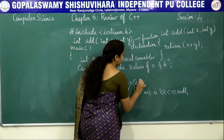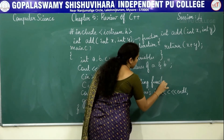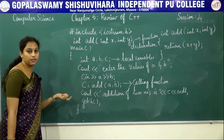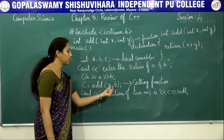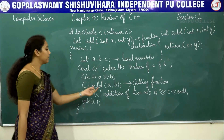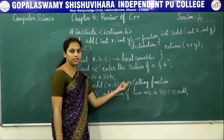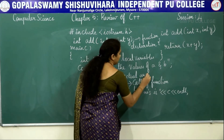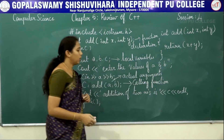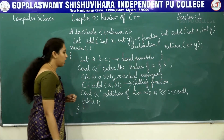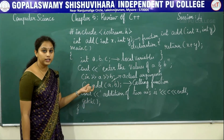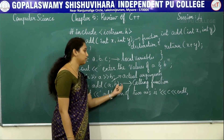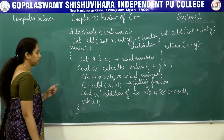This is called the calling function. The syntax of the calling function is: variable = function_name(argument list). The variables in the calling function are called actual arguments. Why are they called actual arguments? Because these variables store the values even before they are used in the calling function section, hence they are called actual arguments.